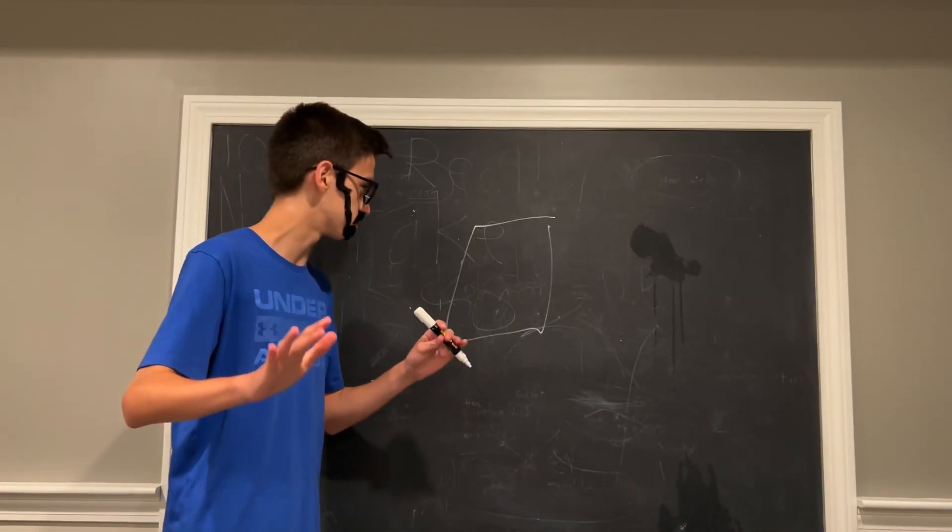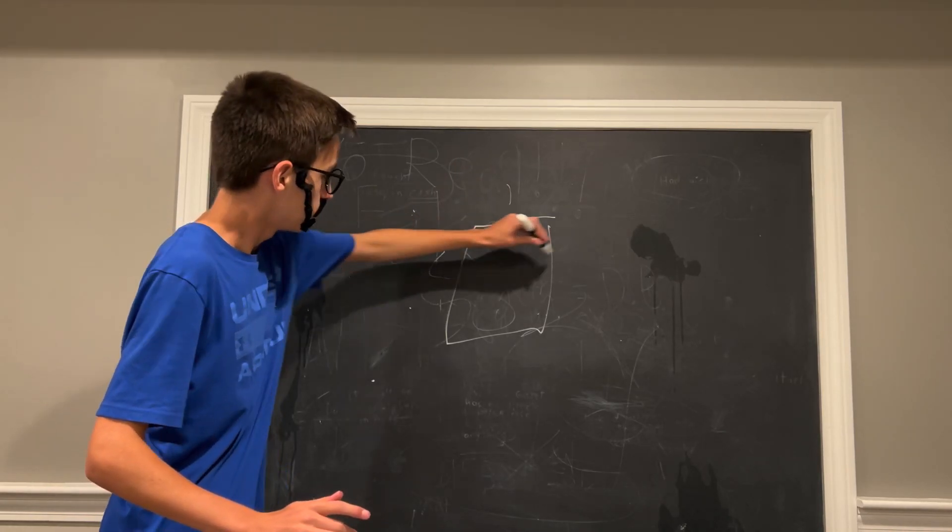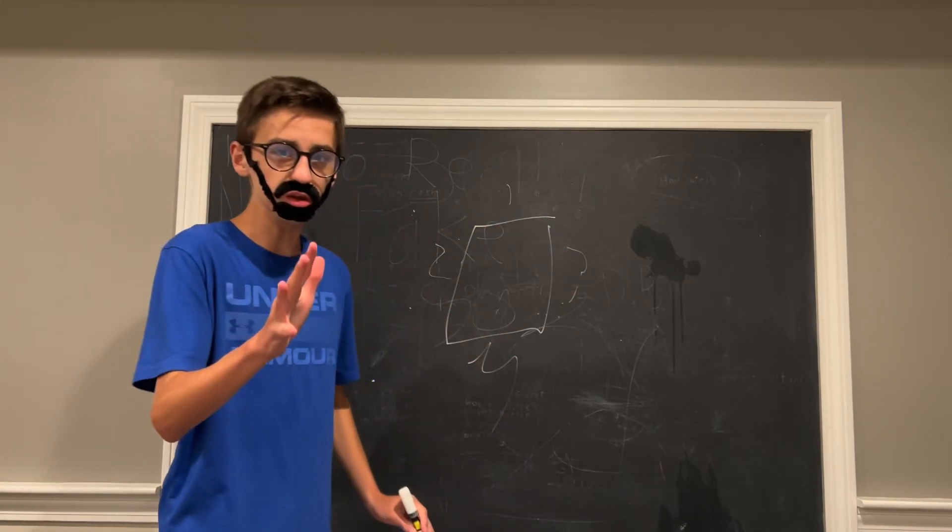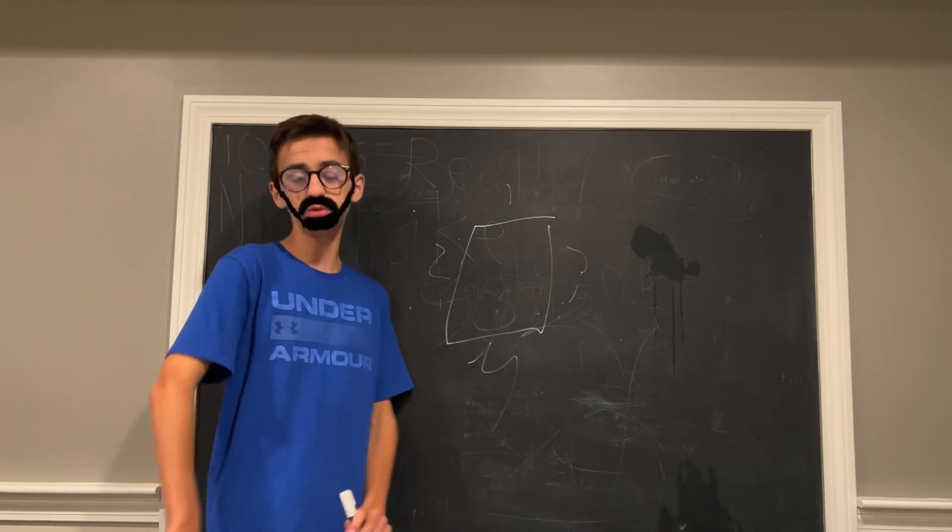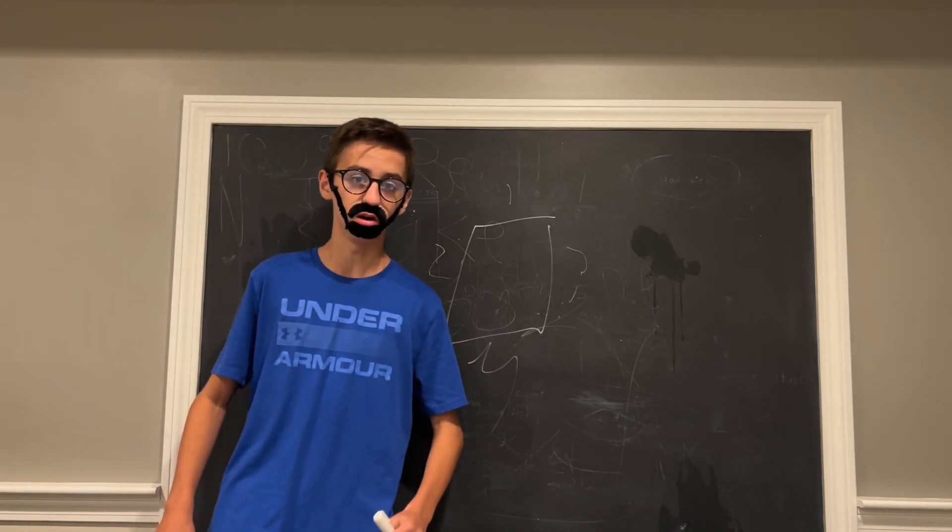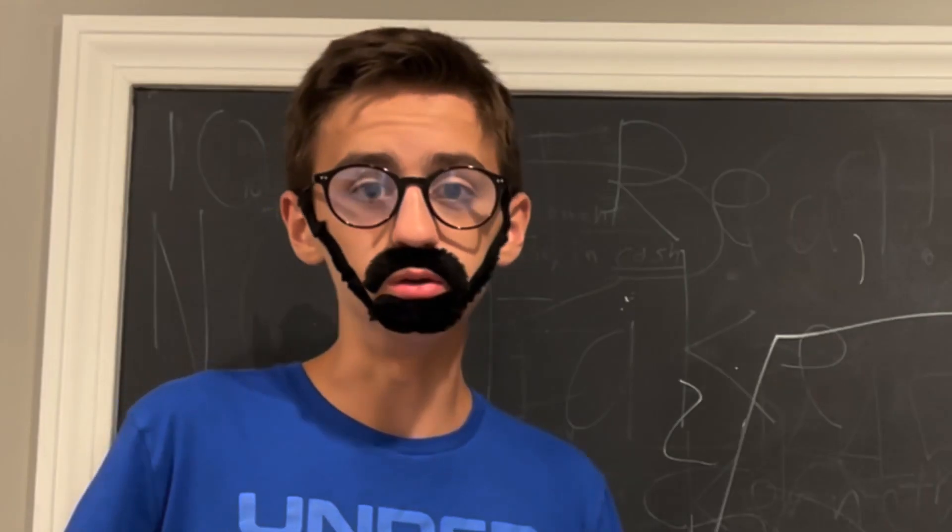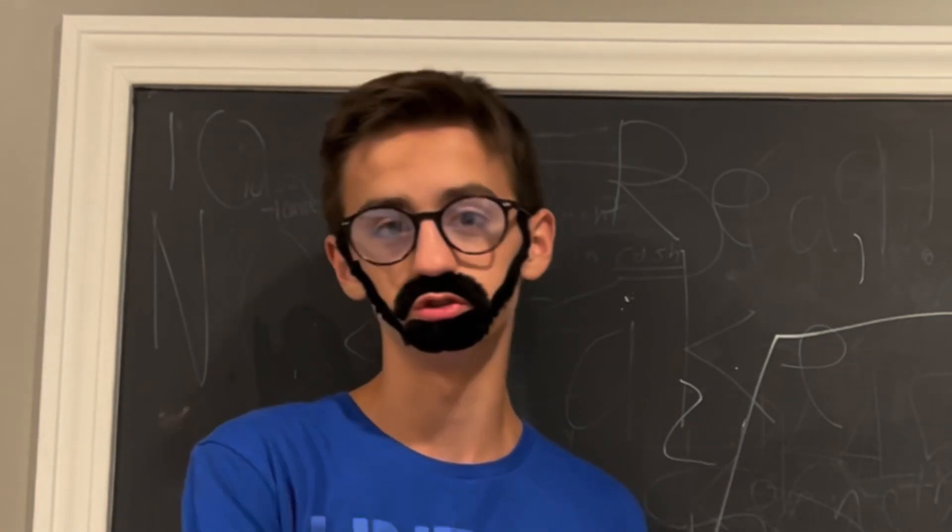So here's the thing about squares, alright? You may think they have four sides, but really, they don't. This is because of a wacky theory I like to call the square theory. I don't know what it means, I just saw it off Wikipedia so it must mean it's true.